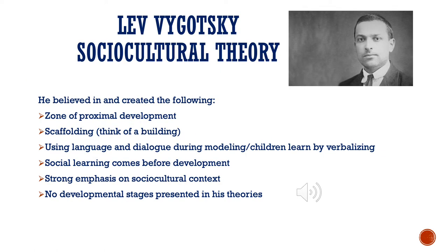The first theorist we're going to talk about is Lev Vygotsky, and he had the sociocultural theory. He believed in and created the zone of proximal development, scaffolding — we can think of a building with scaffolding, building the foundation for a child. He also believed in using language and dialogue during modeling, and that children learn by verbalizing what they see in their environment. He believed that social learning comes before development, put a strong emphasis on sociocultural context, and his theory has no developmental stages.